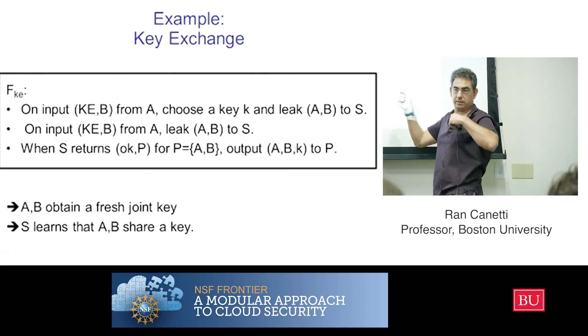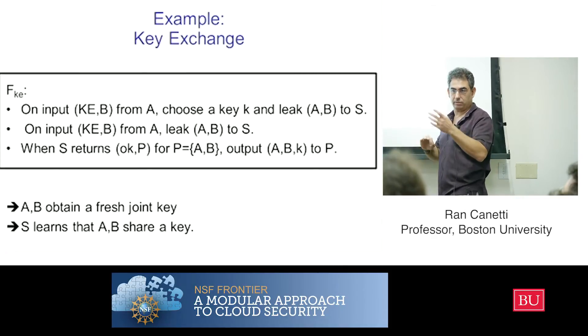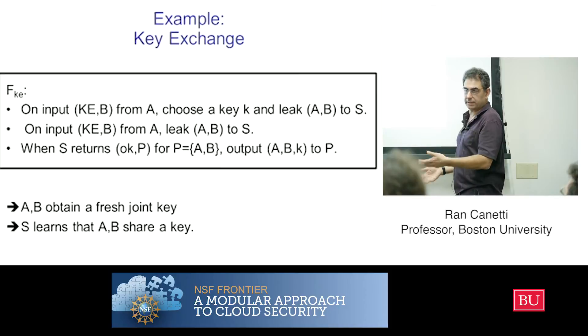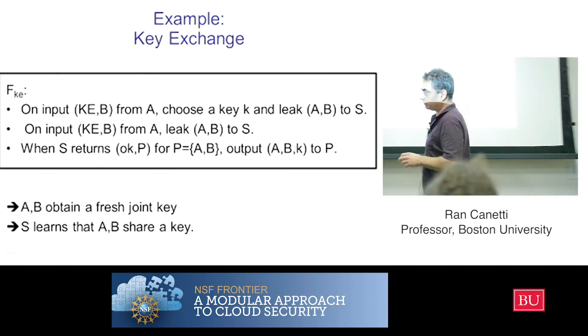According to whatever order the simulator chooses, maybe just to one or not to both. Because we don't want to have to guarantee this in the protocol in the implementation. We just want to guarantee the fact that both parties agree on a key, they get the same key and the key is secret.